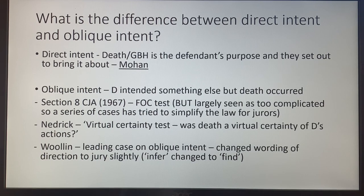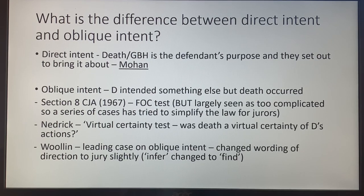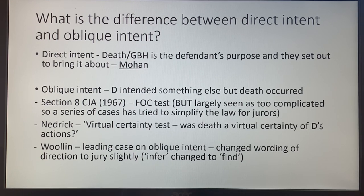The Foresight of Consequences Test wording is really complicated and hard to understand — particularly problematic because it is put to jurors who are lay people with no legal knowledge. So between 1967 and the 1990s–2000s, judges tried to simplify the wording. The two most important recent cases are Nedrick and Woollin. Nedrick rebranded the test as the Virtual Certainty Test: was death a virtual certainty of these actions? It is worth doing some reading around that to really understand it.